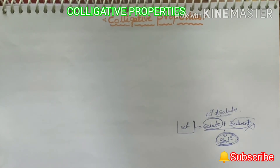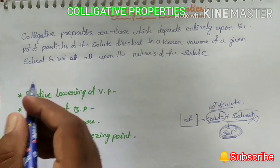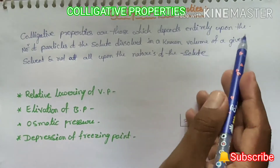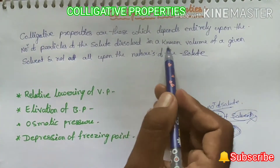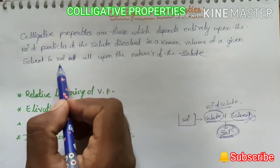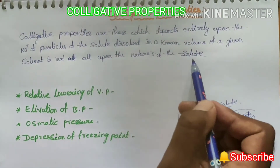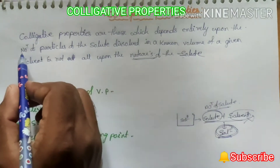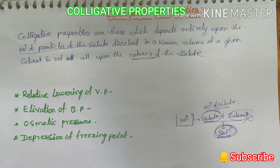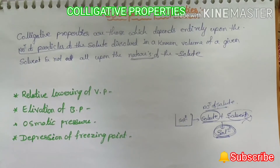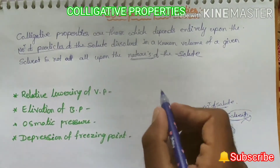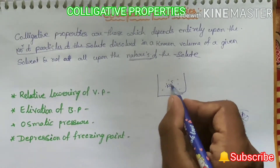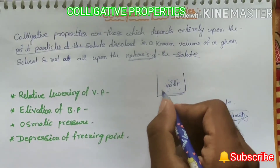Here is the definition: colligative properties are those which depend entirely upon the number of particles of solute dissolved in a known volume of a given solvent, and not at all on the nature of the solute. It does not depend upon the nature of solute, but only upon the number of solute particles dissolved.